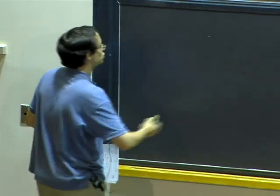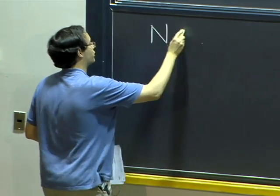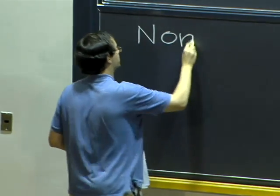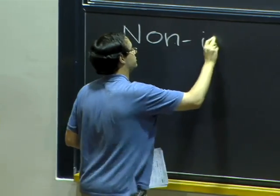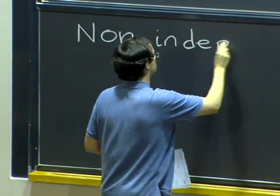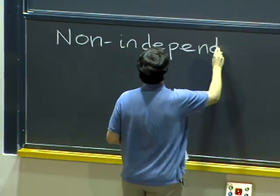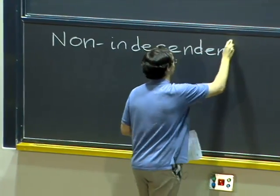OK, so we are going to continue looking at what happens when we have non-independent variables.